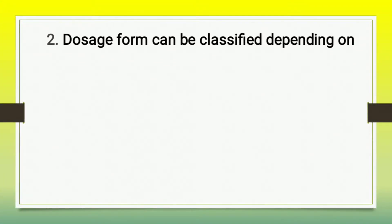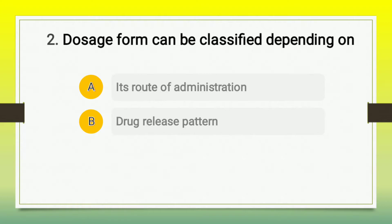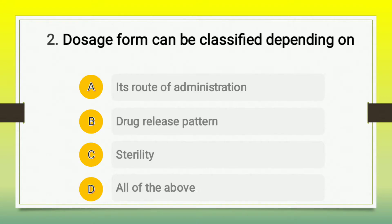The next question is: dosage form can be classified depending on — A) its route of administration, B) drug release pattern, C) sterility, and D) all of the above. The right answer is option D, all of the above. You can classify the dosage form based on its route of administration, drug release pattern, sterility, and also based on nature of formulation, site of application, release site, and design of formulation.